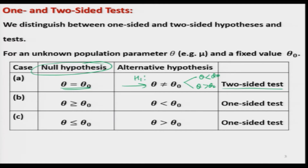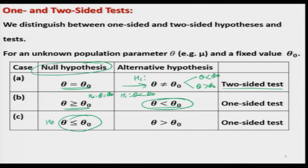Similarly, a test like H naught: theta greater than or equal to theta 0 versus H1: theta less than theta 0, or H naught: theta equal to theta 0 versus H1: theta less than theta 0, these are one-sided tests because we are taking decisions only on one side. Likewise, H naught: theta less than or equal to theta 0 versus H1: theta greater than theta 0 is also a one-sided test. In both cases, the null and alternative hypotheses are disjoint and mutually exclusive.